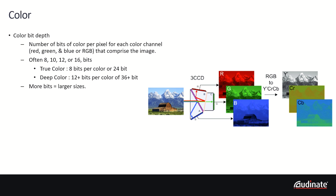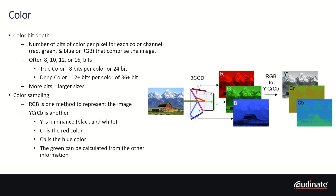Not surprisingly, the more bits of color depth, the larger the file size becomes. Another common method is called YCrCb, where the Y represents the luminance, or black and white information, Cr represents the red color information, and Cb the blue color information. The green channel information can be derived from the other channels. As you'll see later, there is an advantage to using this method.